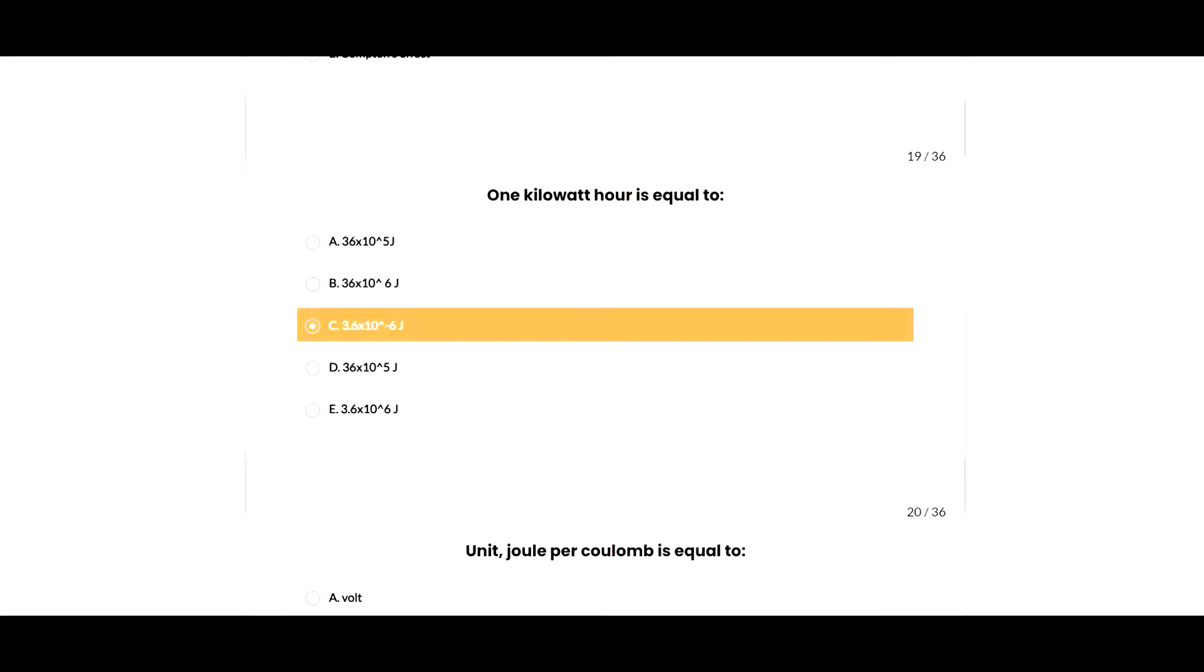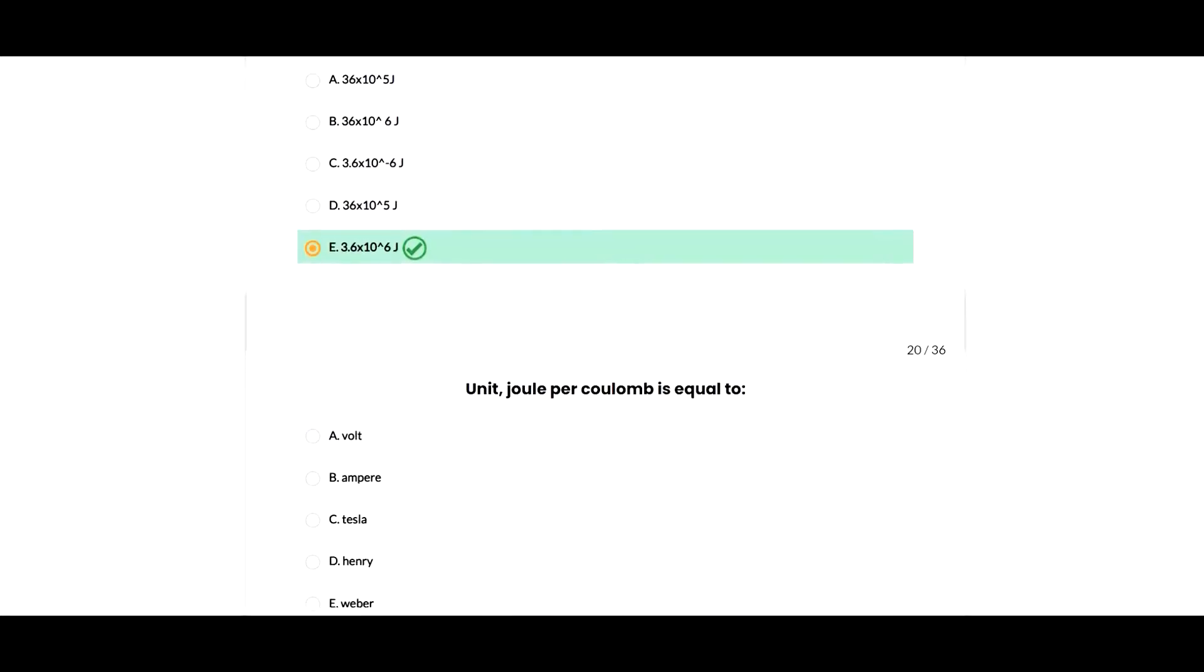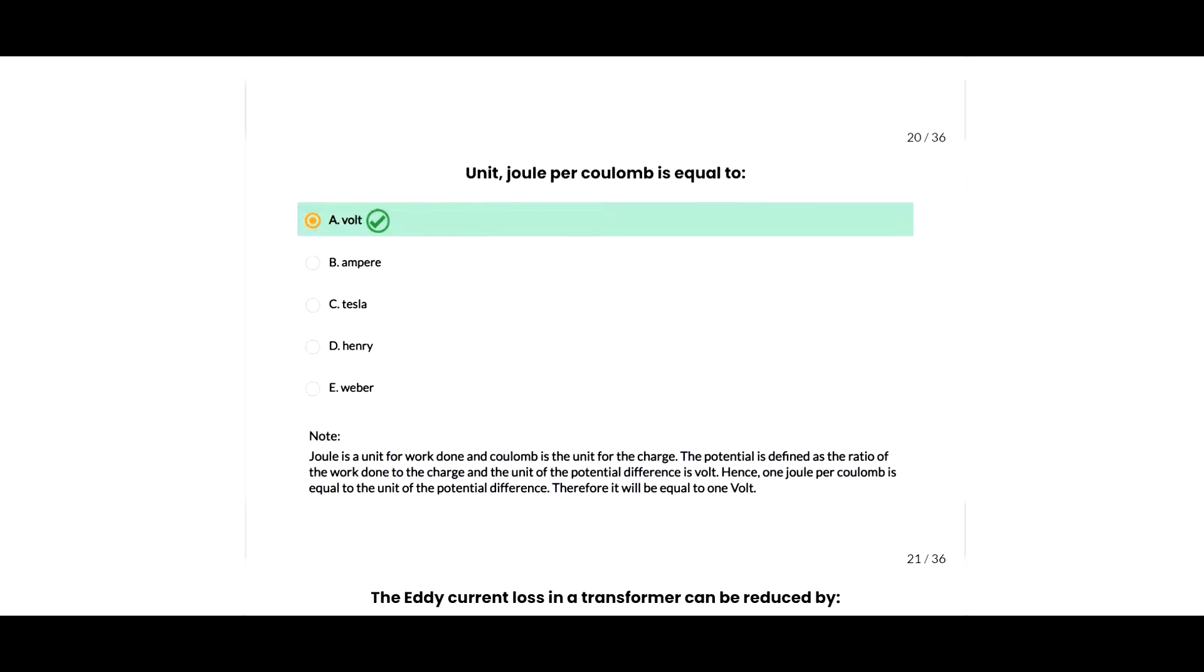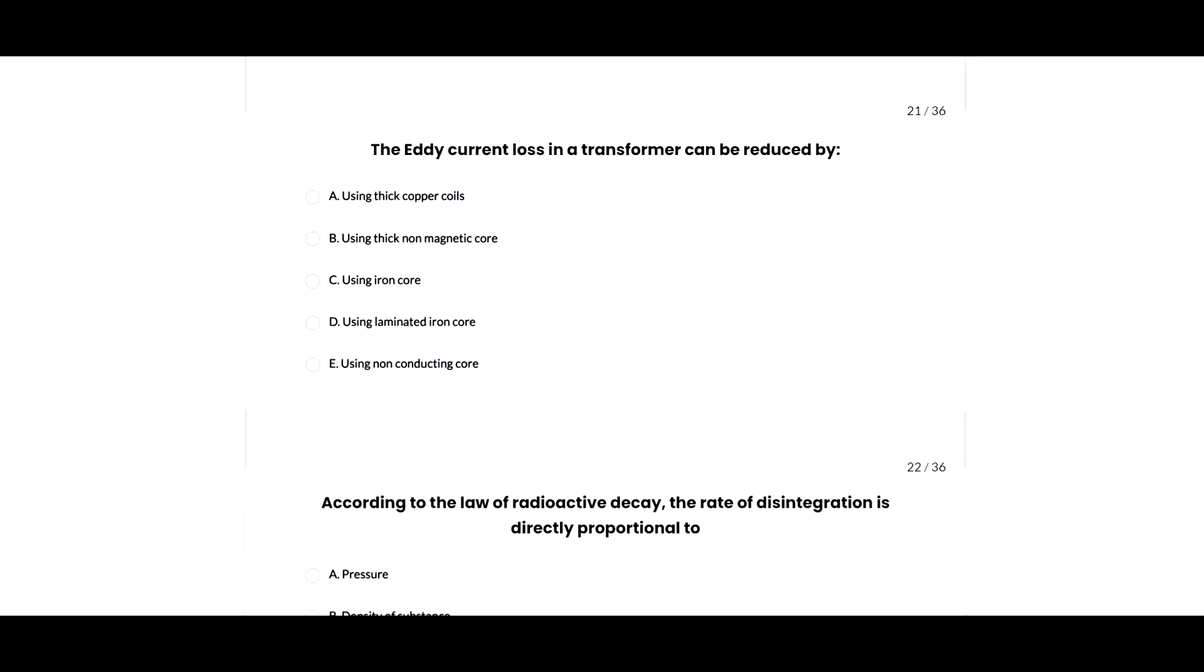Next question: 1 kilowatt hour equals 3.6 multiplied by 10 to the power 6 joules. Next: joule per coulomb equals volt, so A option is correct. Joule is a unit of work and coulomb is the unit of charge. Potential is defined as the ratio of work to charge, and the unit of potential difference is volt. Hence 1 joule per coulomb equals 1 volt, so A option is correct.